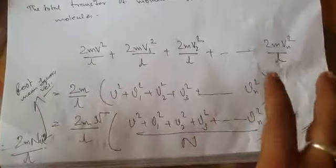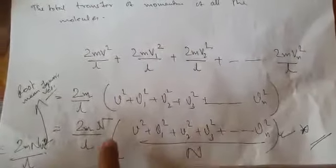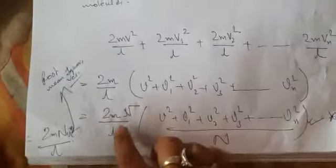In the previous video you learned what is root mean square velocity. Root mean square velocity U equals, if there are N number of molecules, v1 square plus v2 square plus v3 square plus dot dot dot vn square. This is root mean square, and in place of this I can put U square because root over is not there.